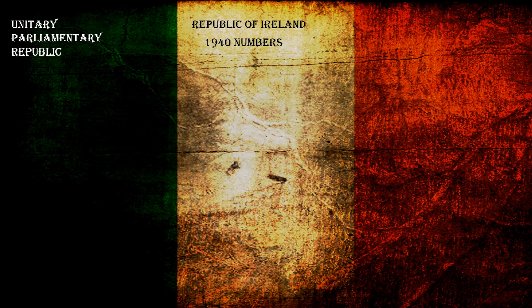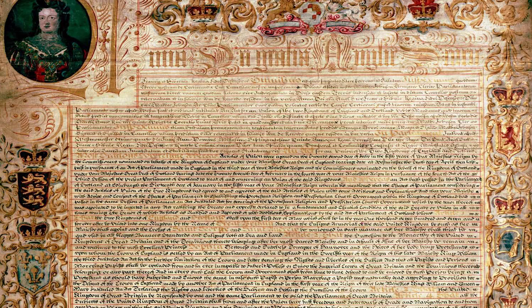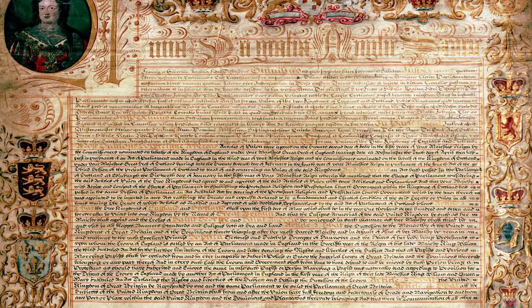40,000 men with a reserve force of 105,000, 6 torpedo boats and 4 other craft. From the Act of Union of 1800 until December of 1922, the island of Ireland was part of the United Kingdom of Great Britain and Ireland.